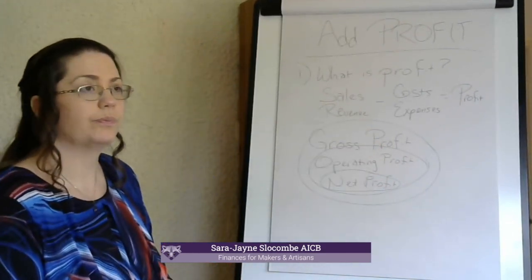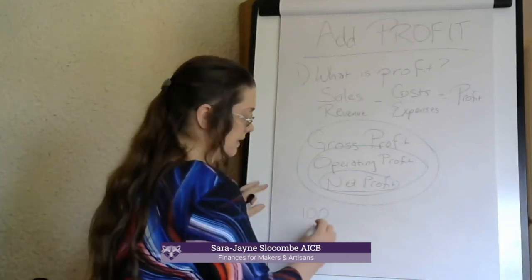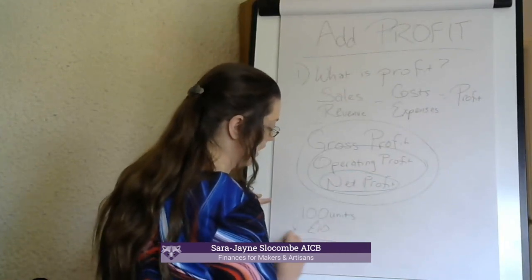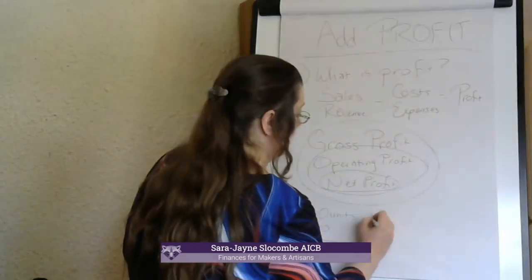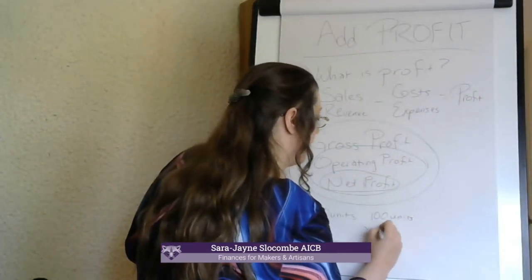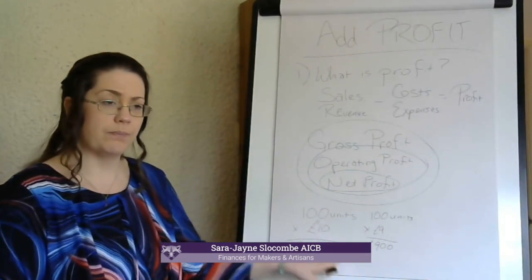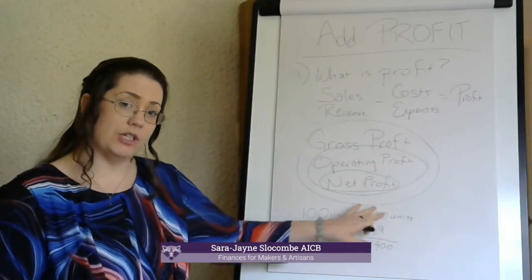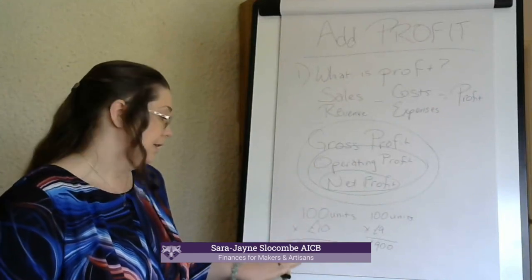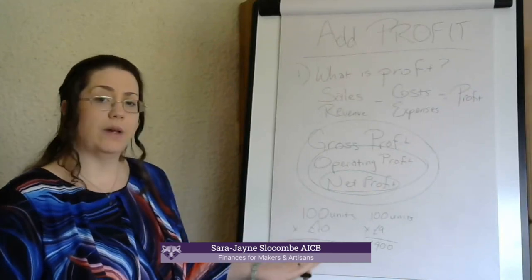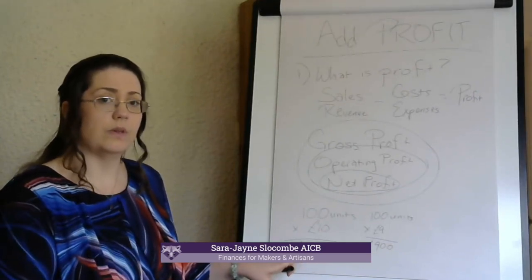So, revenue: if you've sold a hundred things this month at ten pounds, your revenue is a thousand pounds. If you have a sale on and you actually only charged people nine pounds, your revenue is now nine hundred pounds. If you were donating one pound of each of those products to a charity, for example the Ukraine appeal, your revenue is actually still a thousand pounds because that's what you took from your customers.